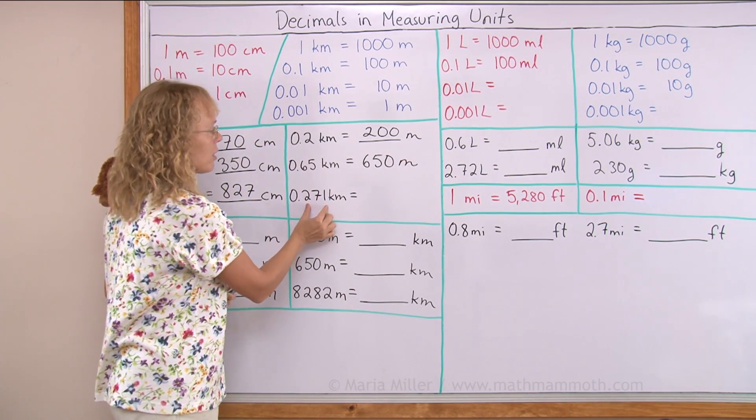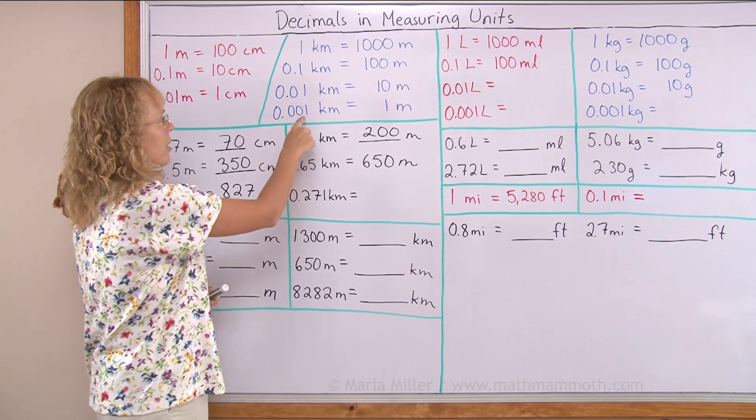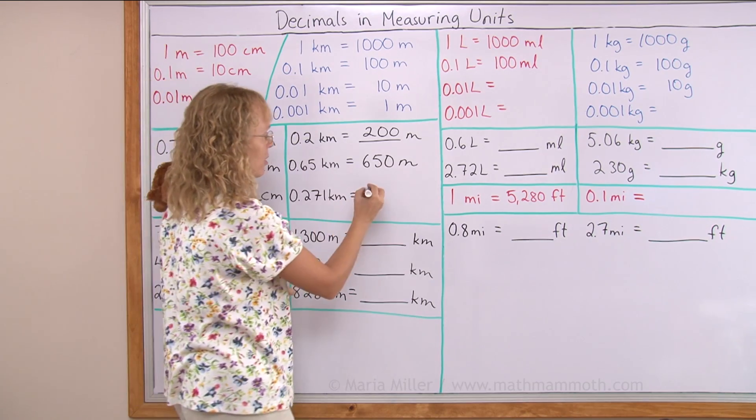Or here, 271 thousandths parts of a kilometer. If one thousandth part is one meter, then these are just 271 meters. Let's go on here.